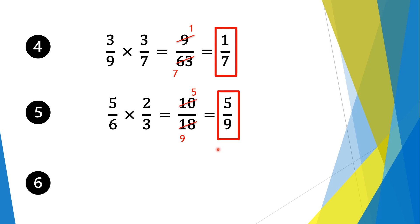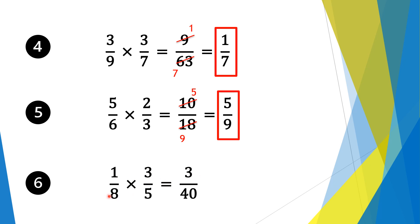Moving on to question 6. We have 1/8 times 3/5. So again, we multiply the numerators first: 1 times 3 is 3. And then we multiply the denominators: 8 times 5 is 40. So our solution is 3 over 40.